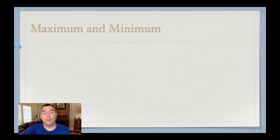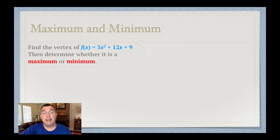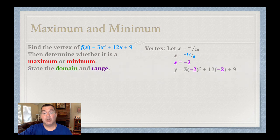Okay, here's another example. If I have f of x equals 3x squared plus 12x plus 9, I'm going to find the vertex, figure out whether it's a max or a min, and state the domain and range. So again, x equals negative b over 2a. I'm going to plug in my a and b, and I get negative 12 over 6.